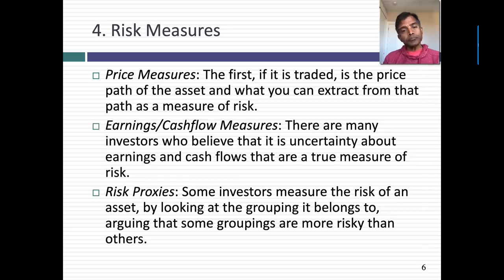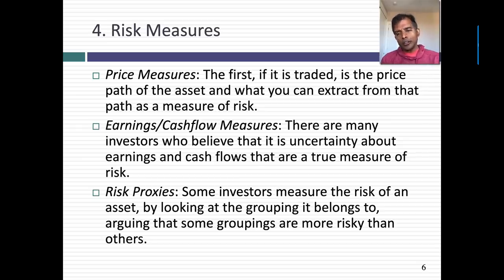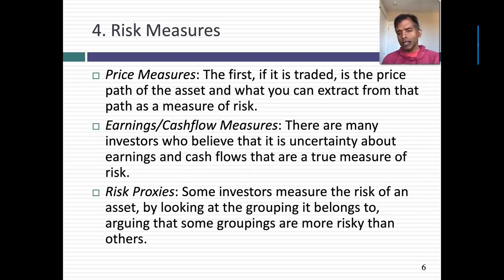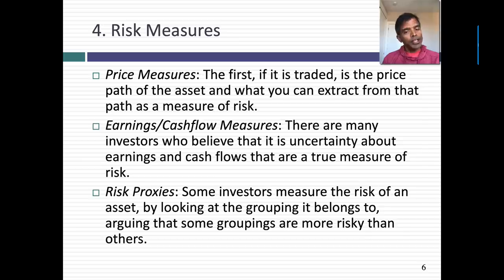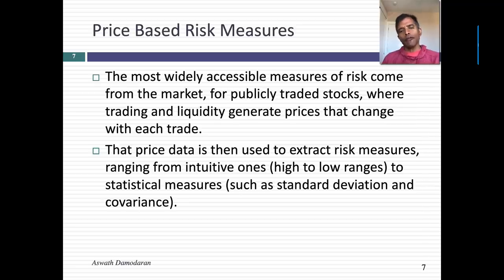Let's talk about risk measures. Broadly speaking, there are three measures of risk that investors use. The first are price-based measures, where you take the stock prices of a traded asset and use those stock prices over time to extract measures of risk. The second are earnings or cash flow measures, where you look at the past history of earnings and cash flows to get a sense of how risky a company is. Third are proxies — stand-ins for risk — where you look at some characteristic of a company and draw conclusions about risk. For example, small companies are presumably riskier than larger companies, and low P/E ratio stocks are considered safer than high P/E ratio stocks by some value investors.